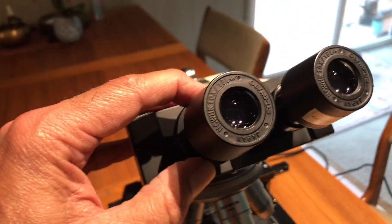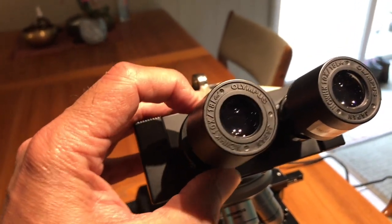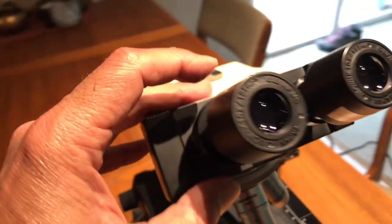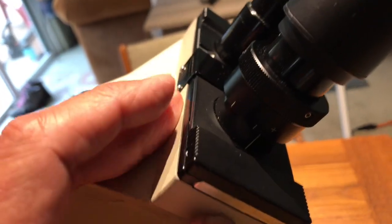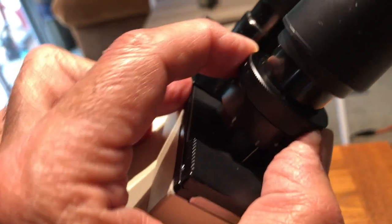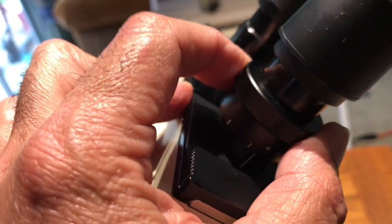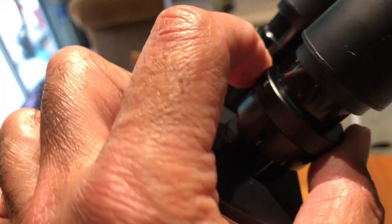The way you use it, there is a dial on the eyepiece that you can turn clockwise or counterclockwise until you get the image, when you're looking through the eyepiece, until the image looks clear to you.